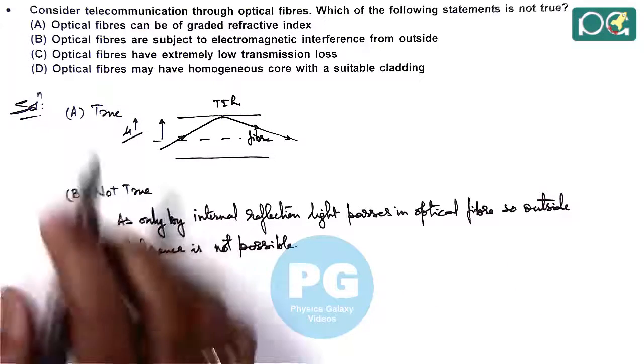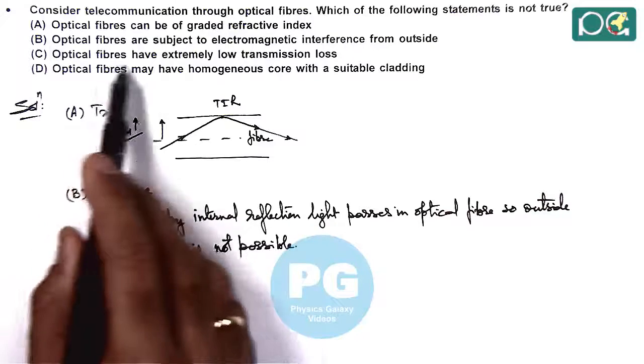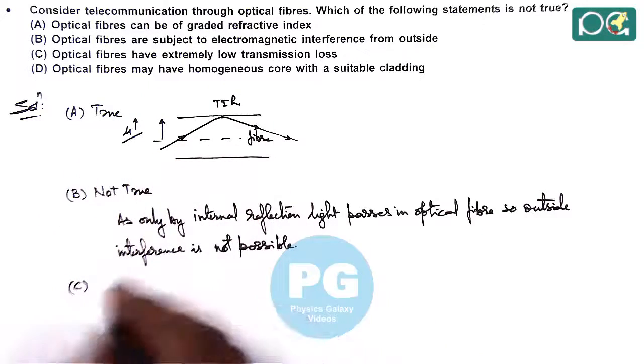Still we can analyze option C and D. In option C it says optical fiber have extremely low transmission loss. That's true.